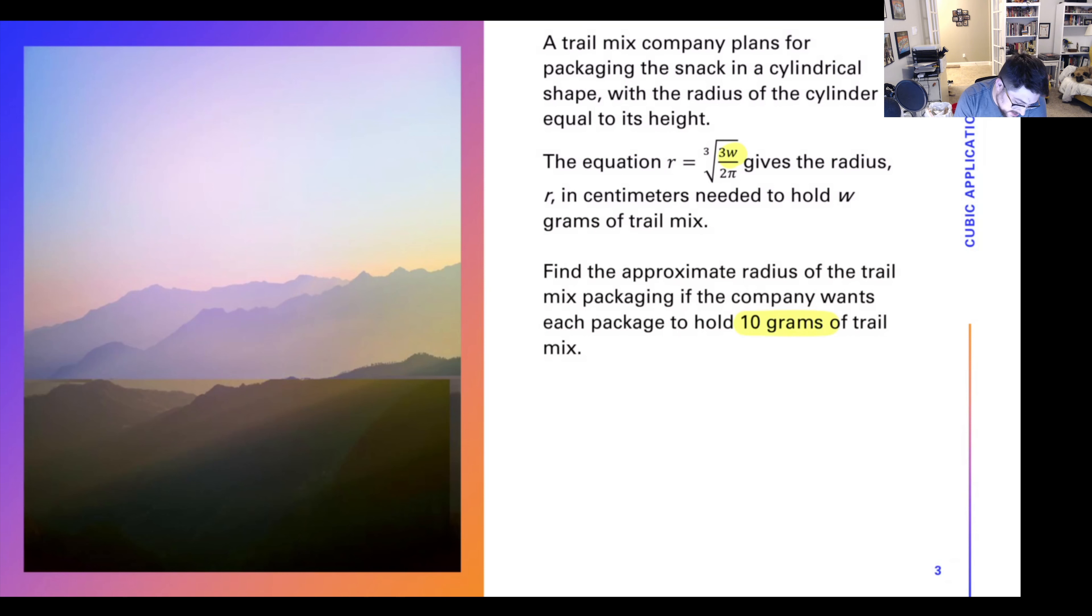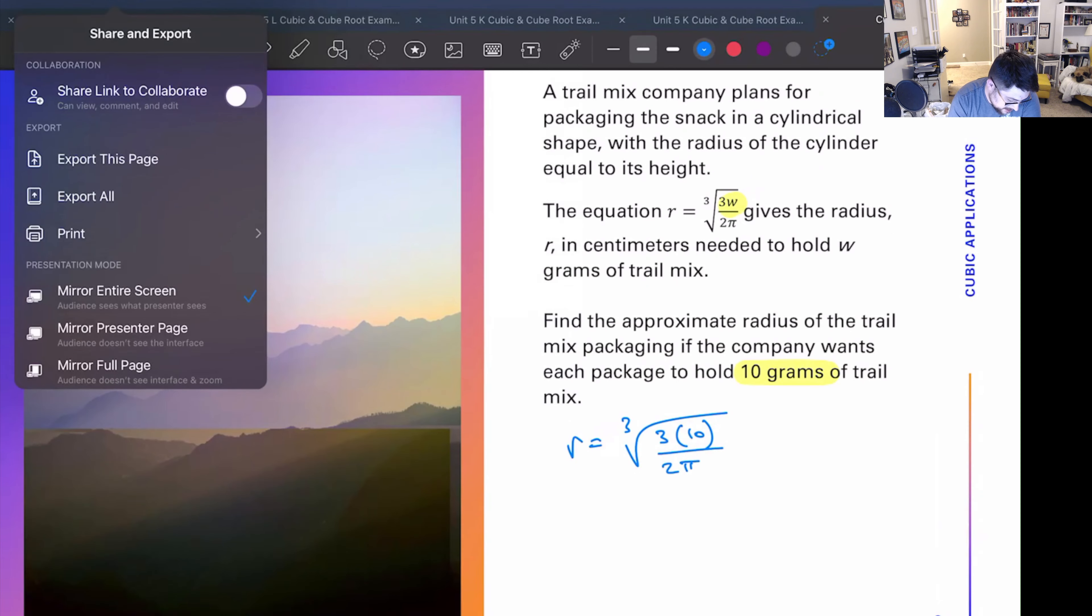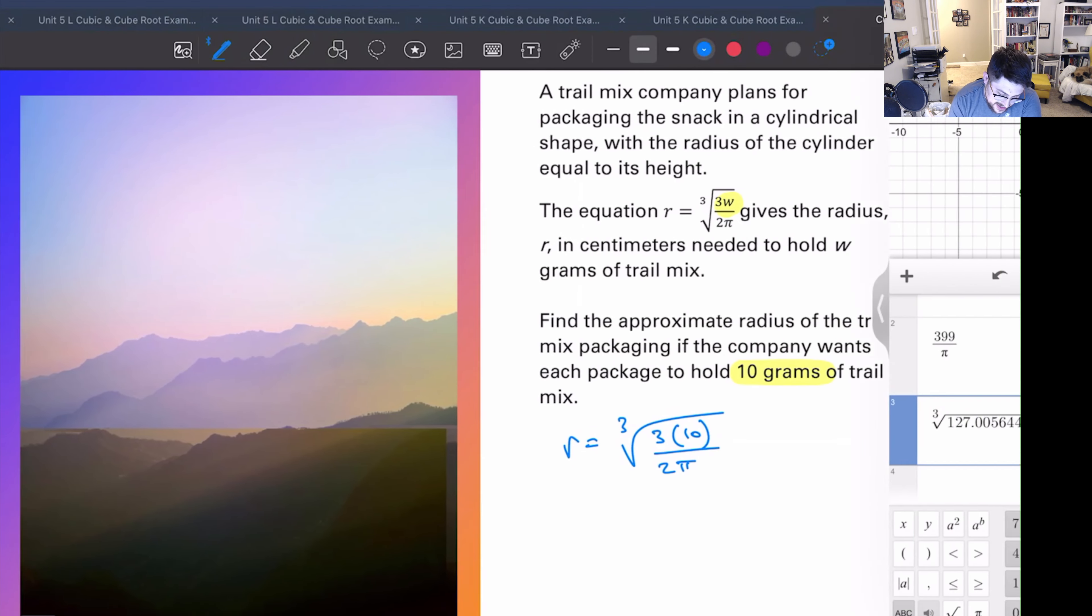Find the approximate radius of each package if each package holds 10 grams of trail mix. Alright, so we essentially have 10 grams is our weight, so we can just plug that in for weight. We do that, r equals cube root 3 times 10 over 2 pi. Hey, look, it's already solved for r. We can just shove all this into our Desmos.